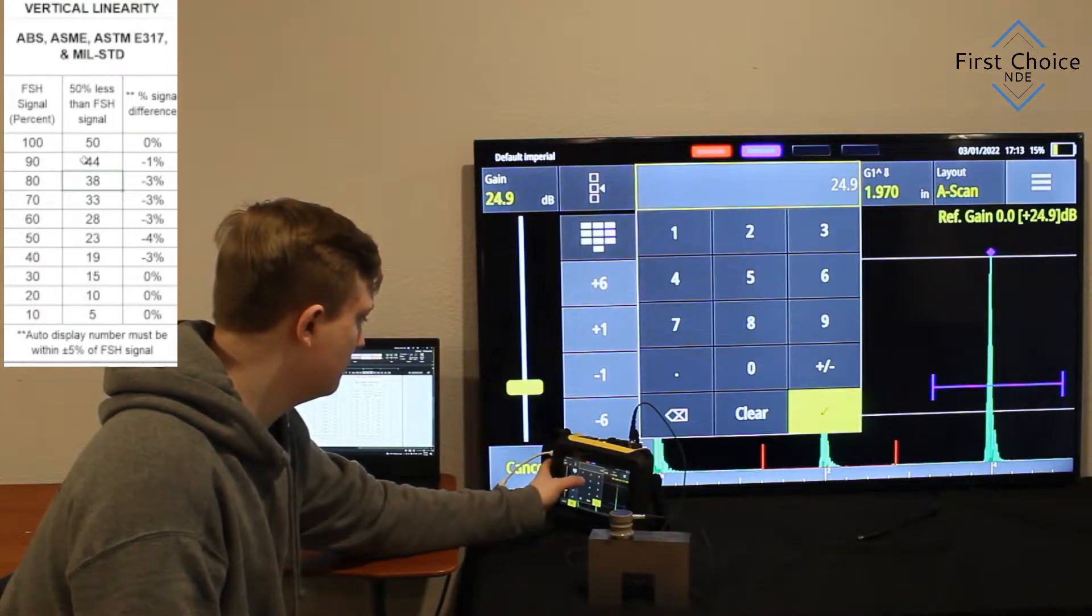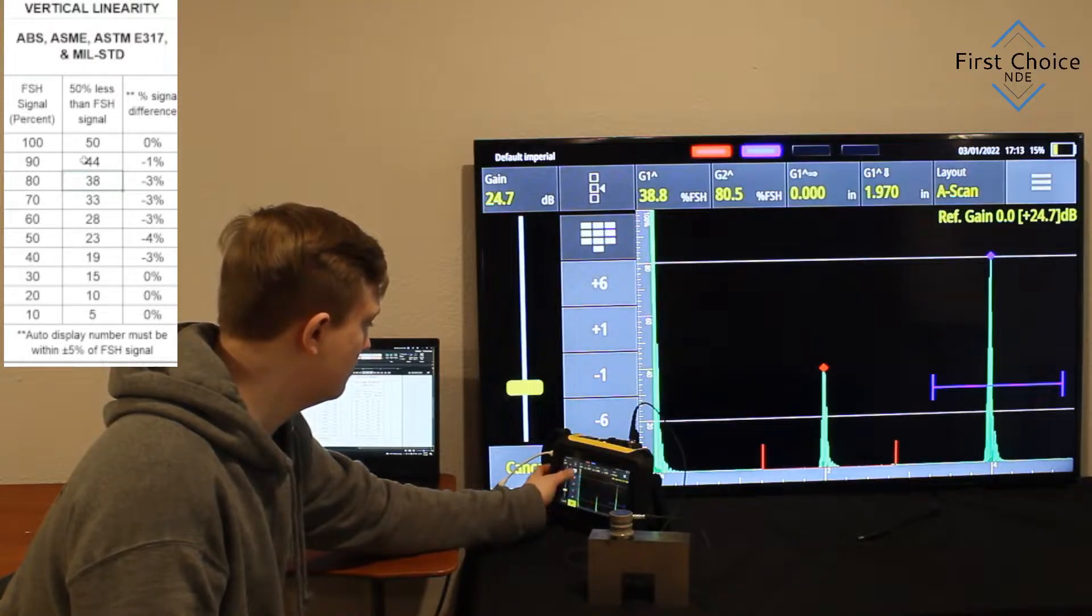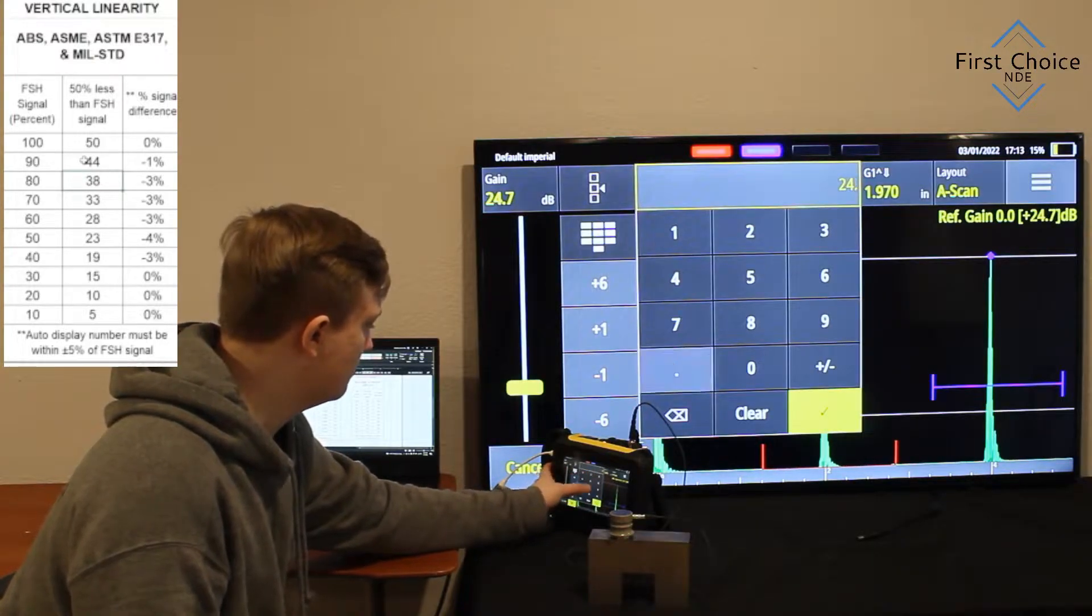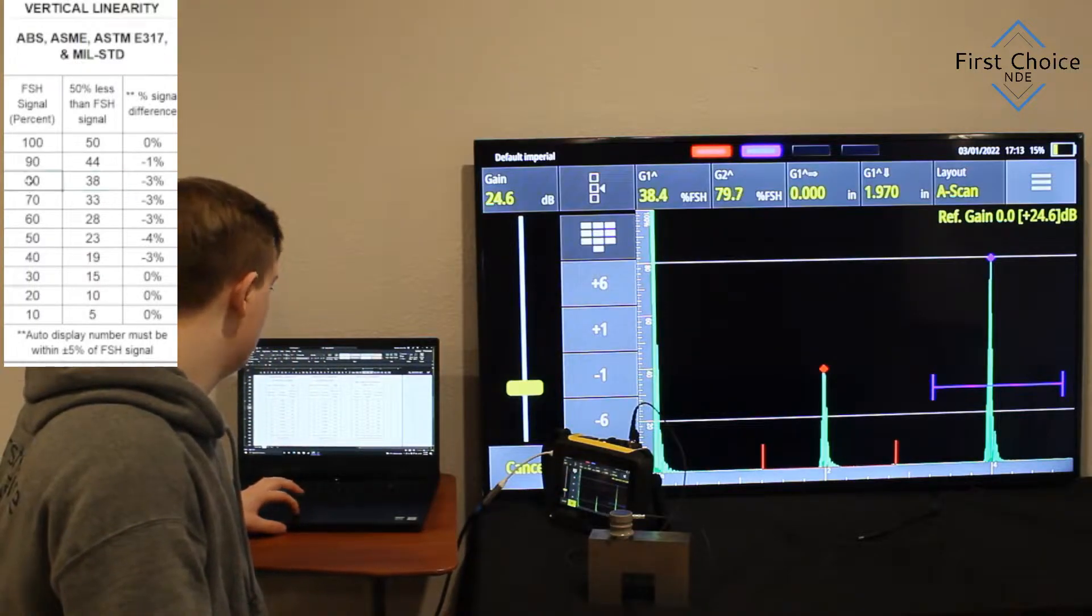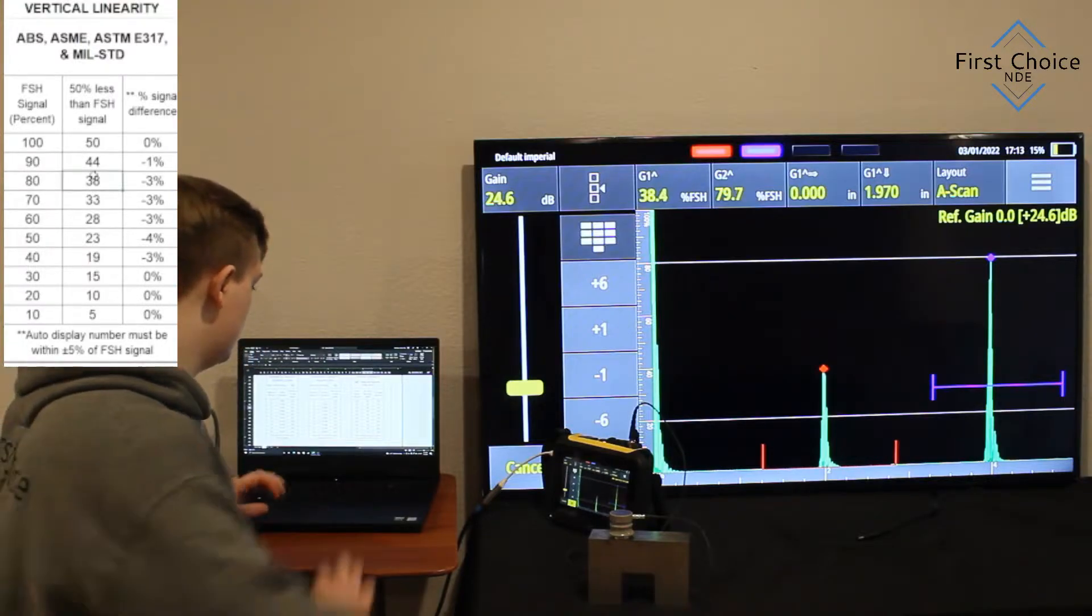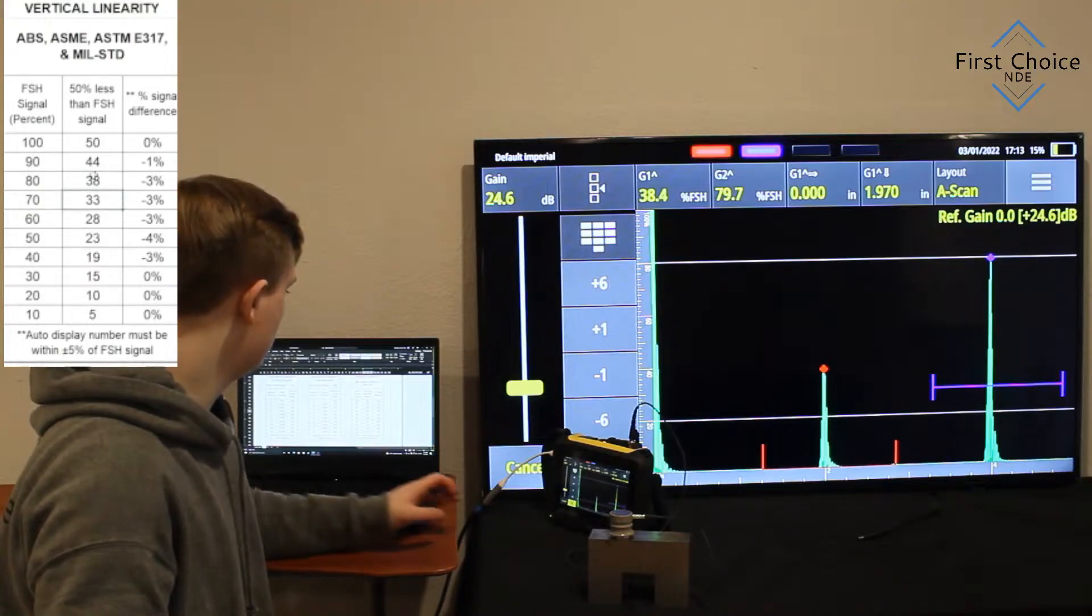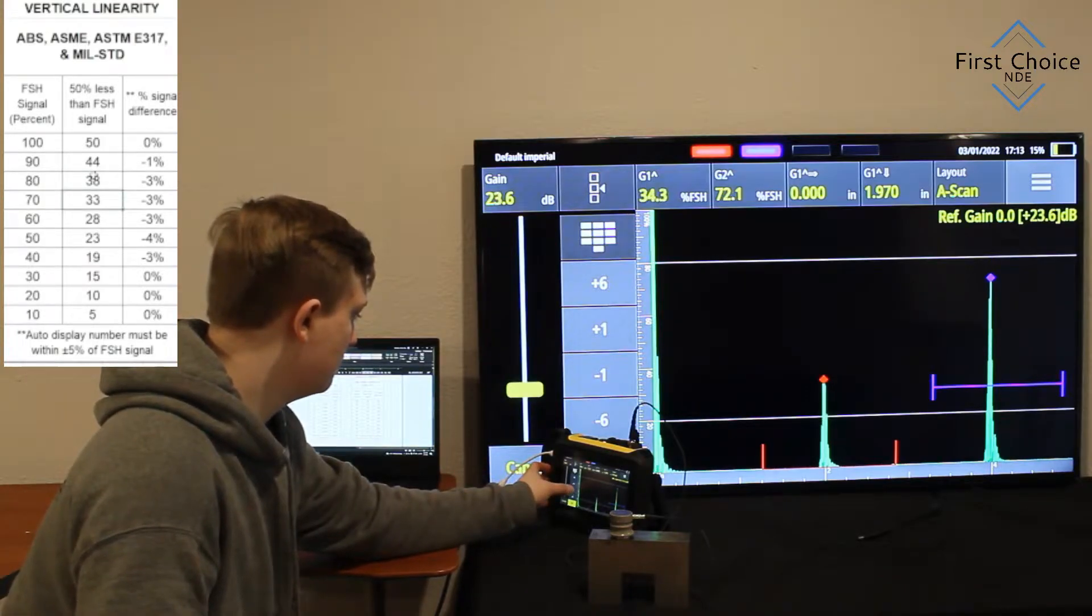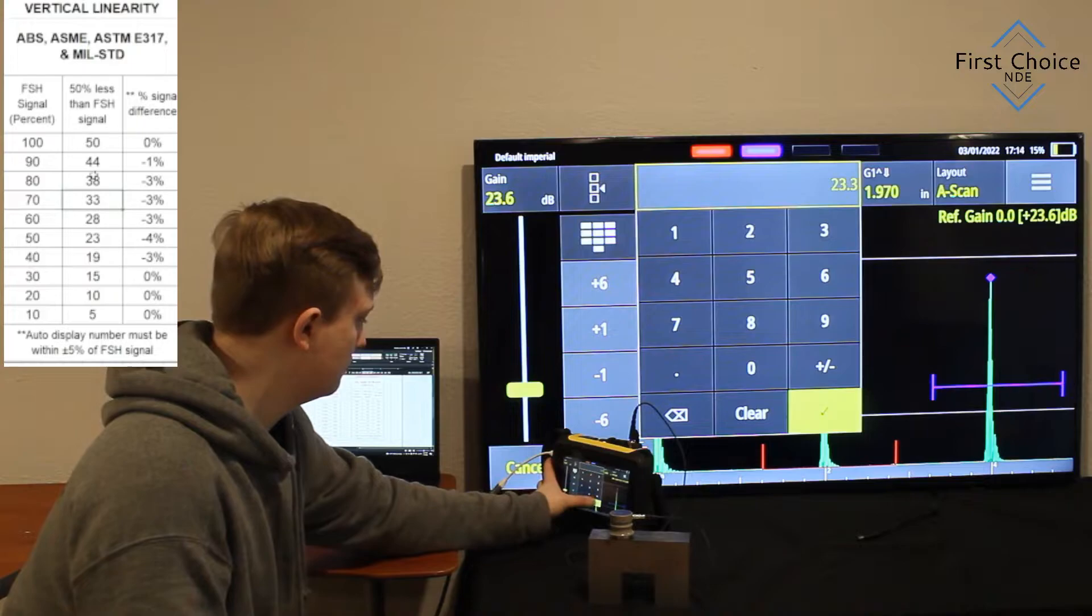Alright, so we'll just go again, lower the dB, make sure that the signal on the right is at 80%. And we're just about there. And we're going to end up with 38% screen height on the left signal. And you see our percent signal difference, you're allowed to have plus or minus 5% of the initial signal. So as you see, on our 80 to 38, we had a minus 3% signal differential, which is okay.